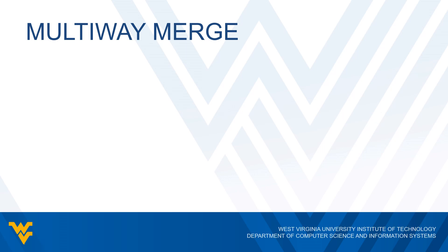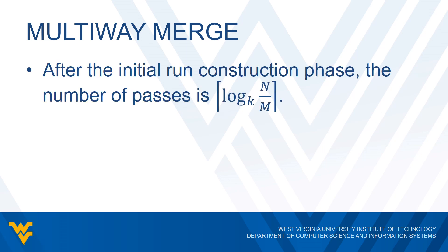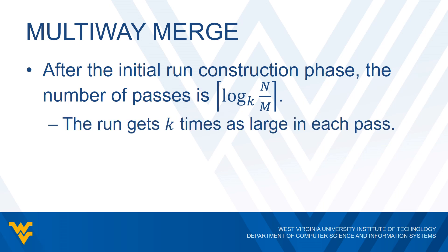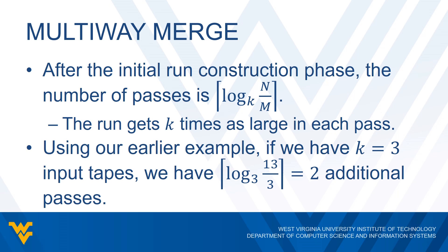So how many passes is this going to take? We still have the initial run construction phase where we're breaking up our data into sorted runs. But the number of merge passes is going to be the ceiling of log base K of N over M. Before, we had the ceiling of log base two of N over M. The run gets K times as large with each pass because we have additional tapes we're reading. Going back to our earlier example, with three input tapes instead of two, we get the ceiling of log base three of 13 over three, which turns out to be two additional passes, whereas with two input tapes we had three additional passes.